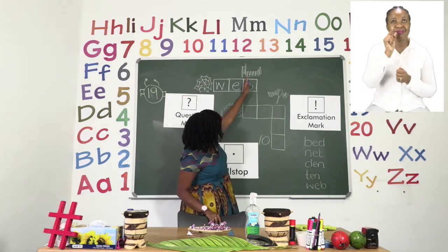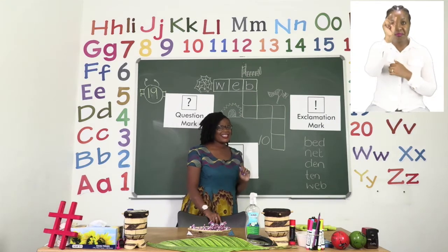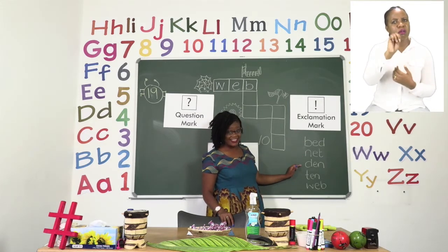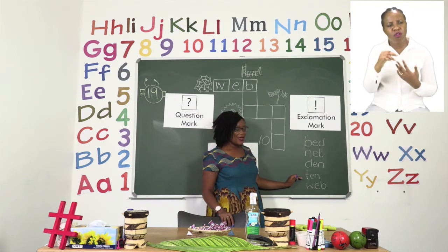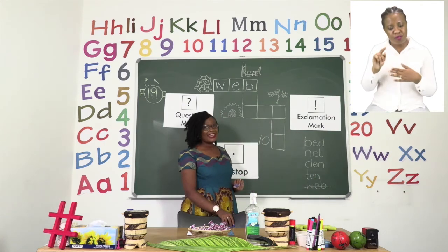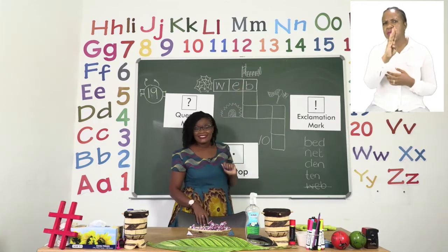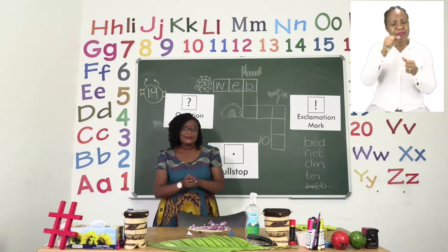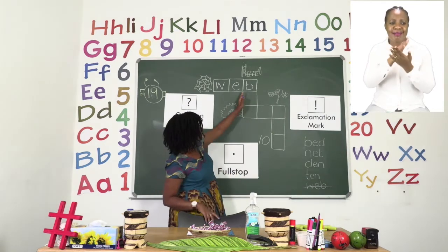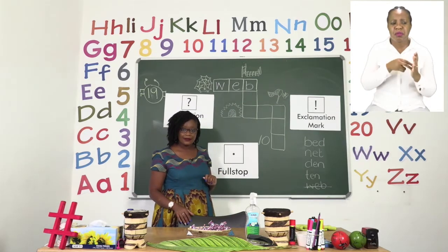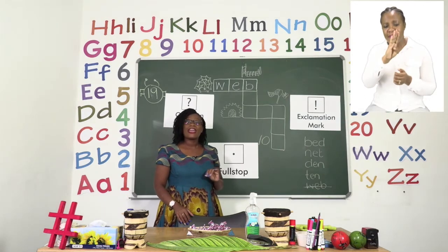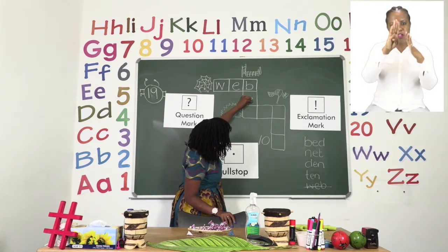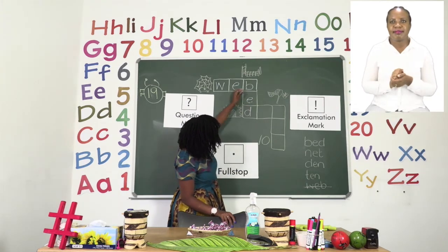The next picture is going down. Is it a bed? Or a net? Or a den? Or the number 10? Remember, we've already used web so we can cross it out. If you said this looks like a bed — well done! We also have our first sound already. Remember in a crossword puzzle, sometimes the blocks are sharing letters and sounds. In this case, our last letter for 'web' is our first letter for 'bed'. So all we need to fill in now is our E and D. Now we have the word 'bed'.